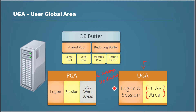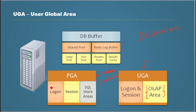So that is what UGA is — Oracle calls it the User Global Area. It contains logon information and session state. The important thing is: in a dedicated server environment, UGA resides in the PGA. In a shared server environment, UGA resides in the SGA.